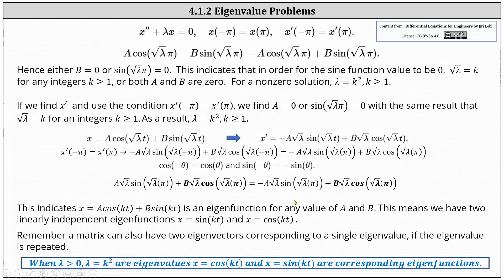This is an eigenfunction for any values of a and b, which means we have two linearly independent eigenfunctions. Letting a and b each equal one, we can use x equals cosine kt and x equals sine kt as the two linearly independent eigenfunctions. Recall that a matrix can also have two eigenvectors corresponding to a single eigenvalue if the eigenvalue is repeated. In conclusion, when lambda is greater than zero, the eigenvalues are lambda equals k squared, where k is any integer greater than or equal to one, with corresponding eigenfunctions x equals cosine kt and x equals sine kt.